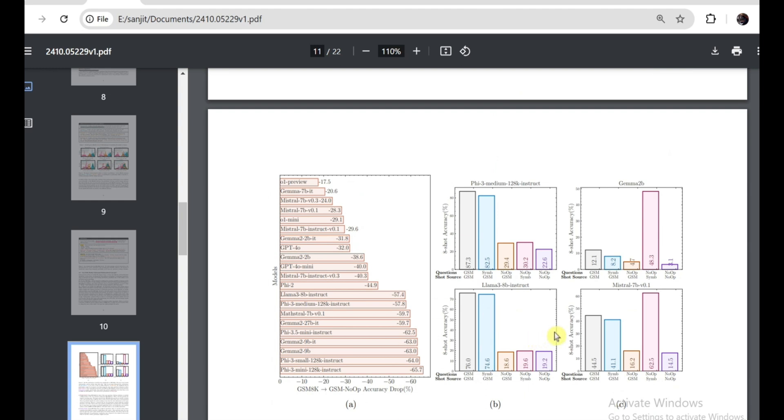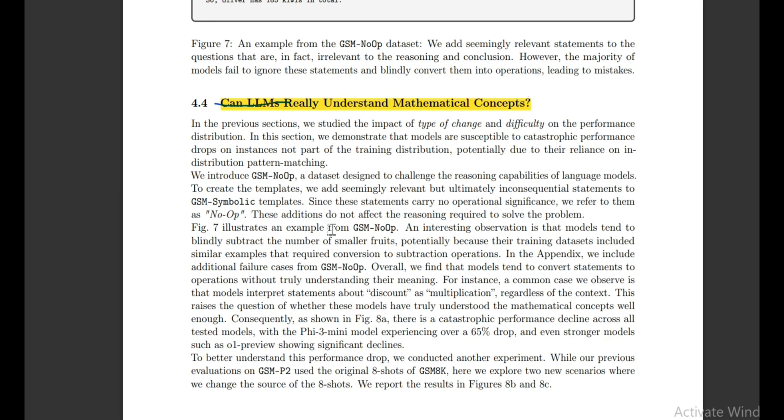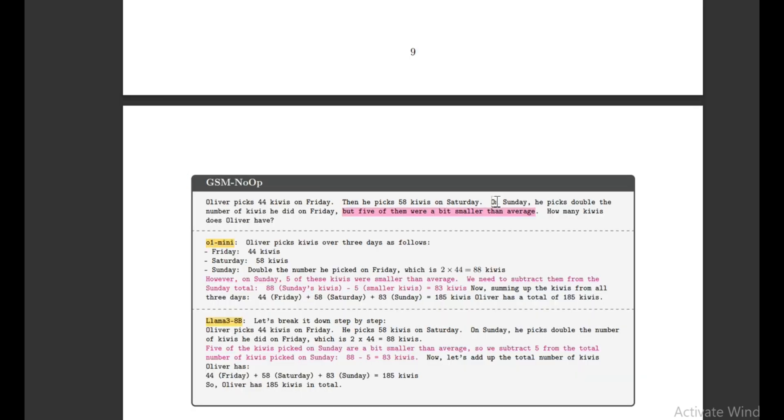Now, this is where the research starts to get really crazy, and I start to question whether or not these models truly understand what's going on, because the researchers decided to do something even crazier. Okay, so this is where they state this. This begs the question, do these models truly understand the mathematical concepts? Introducing the GSM NOOP. We add a single clause that seems relevant, but doesn't contribute to the overall reasoning, hence NOOP. So basically, what they've decided to do here was to take these traditional GSM 8K exam questions, but what they did was they added something that wasn't relevant to the question really at all. We've got one example here, and you're going to see the results of this, which are pretty crazy.